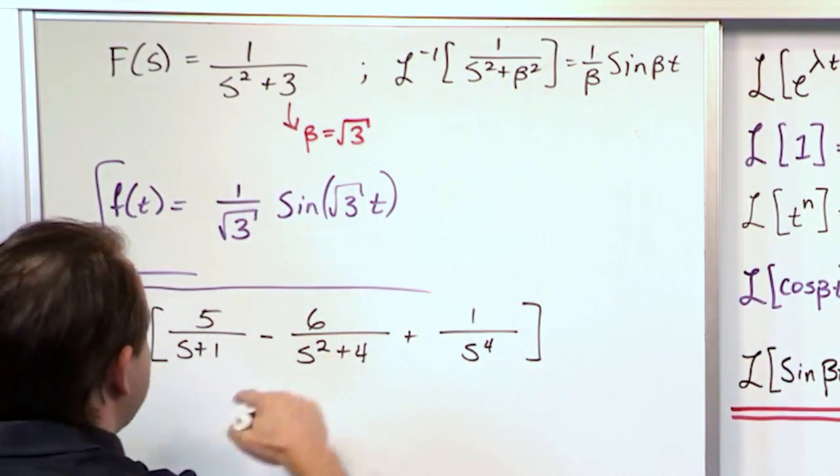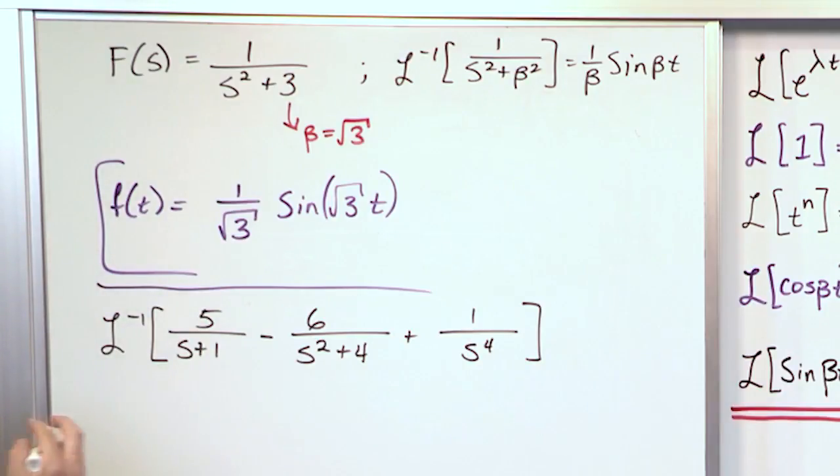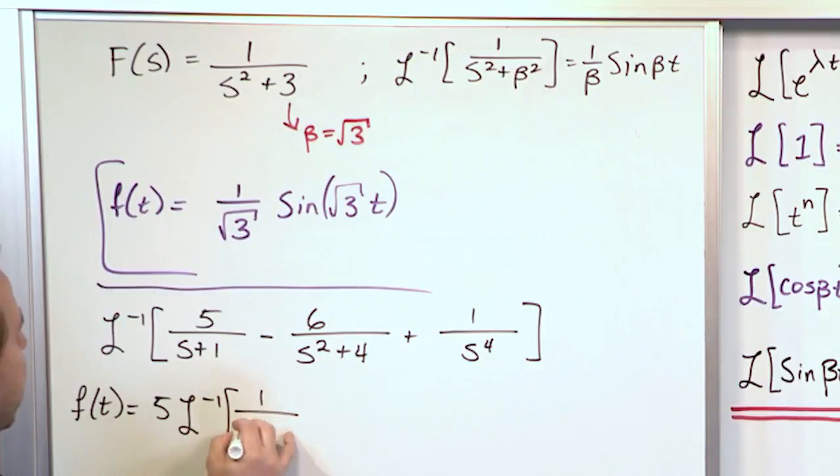Also notice that once we apply it to each guy, we can pull the constants out there. So the way we're going to simplify this is we're going to say that the function of time is going to be working on this one here. Since we have a 5 which is just a constant multiplied in there, it could be 5 times the inverse Laplace transform of 1 over s plus 1.